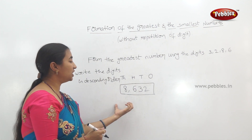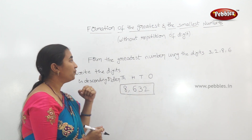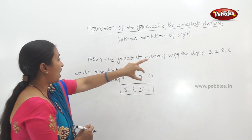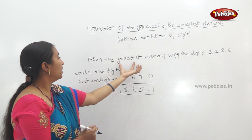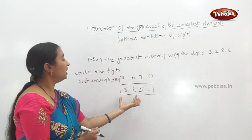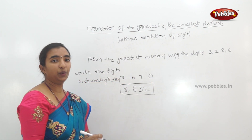Then 3, then 2. So the greatest number is 8,632.